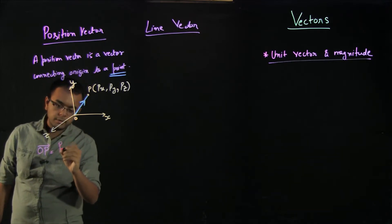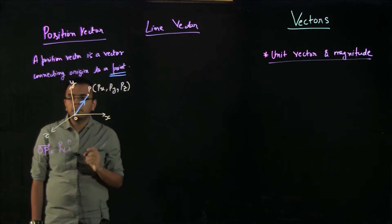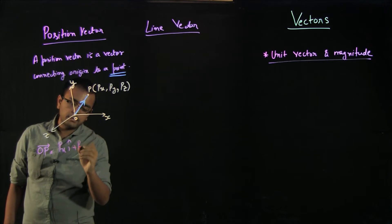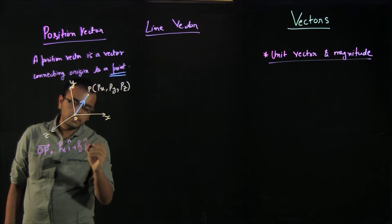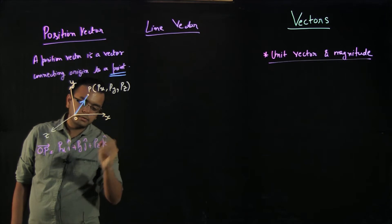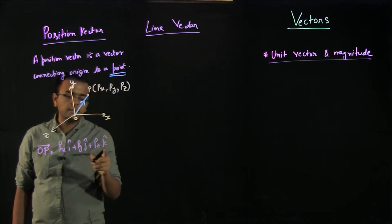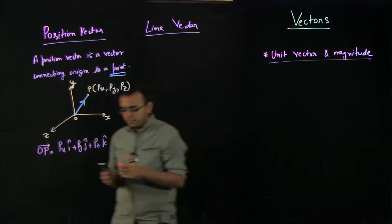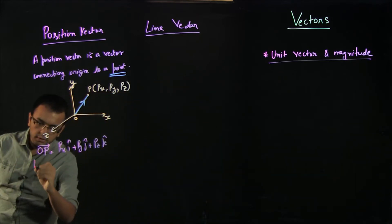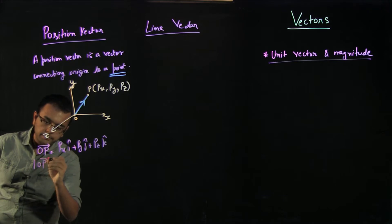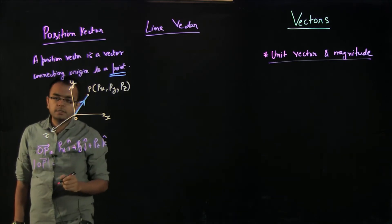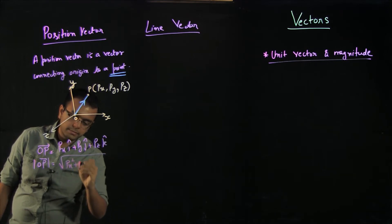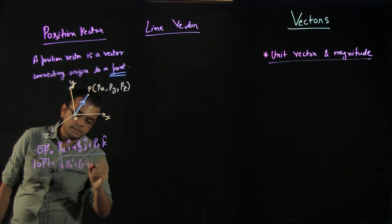OP vector actually means Px i-cap plus Py j-cap plus Pz k-cap, where i-cap means the direction in the x-axis, j-cap for y-axis and k-cap for z-axis. The magnitude of OP vector is the square root of Px squared plus Py squared plus Pz squared.